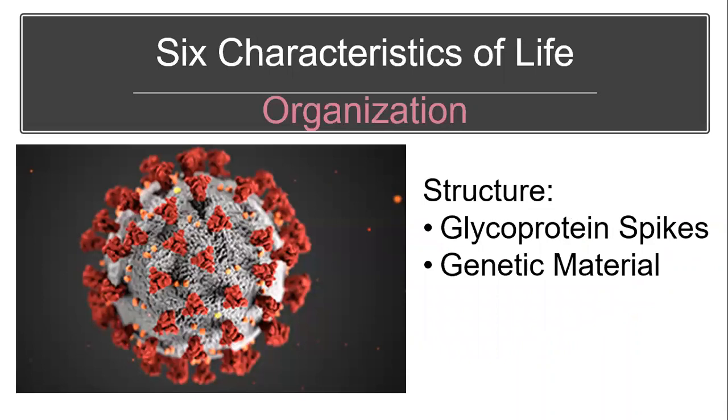Viruses also share the characteristic of having organization. For a virus to be infective, it really needs two structures. One is a glycoprotein spike. On the image here in red, you're seeing glycoprotein spikes of a virus called the coronavirus. These glycoprotein spikes are what attach to cells in order for the virus to infect the cells.